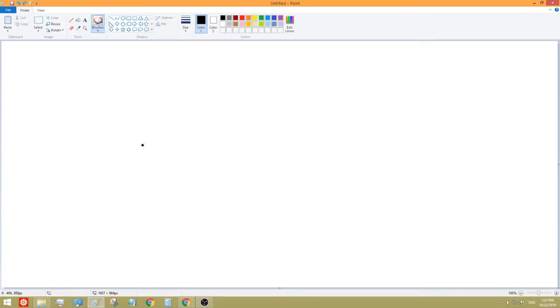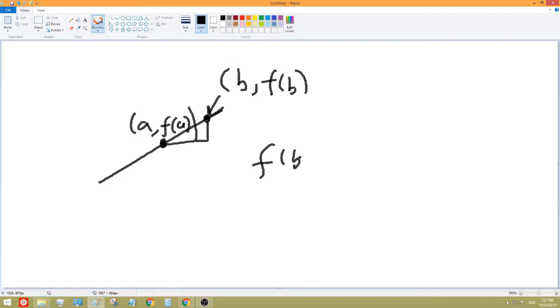So first of all, let's go back to what a derivative is, and that's basically the slope of a line. For example, right here, from here to there, let's say this is a and f of a, and this point is b and f of b. Then the slope between these two lines is f of b minus f of a over b minus a.